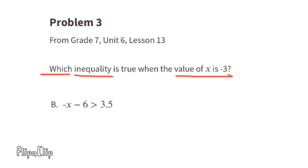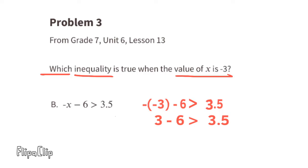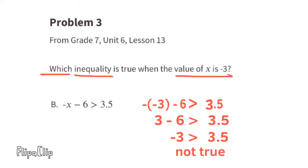Option B: negative x minus 6 is greater than 3.5. Substituting x with negative 3: negative times negative 3 minus 6 is greater than 3.5. Since a negative times a negative is a positive, this becomes 3 minus 6 is greater than 3.5. 3 minus 6 is negative 3, so it reads negative 3 is greater than 3.5 — which is not true, because negative 3 is actually less than 3.5.